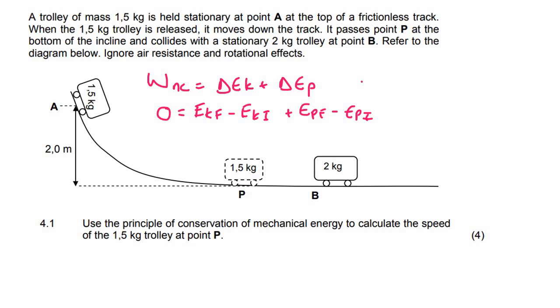Now remember the formulas for EK are one half MV squared and for EP, MGH. And so to go for all of this in now you're going to have a half. Now the mass is 1.5. The final velocity we don't know.